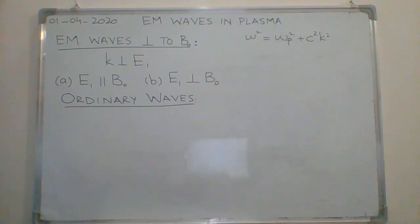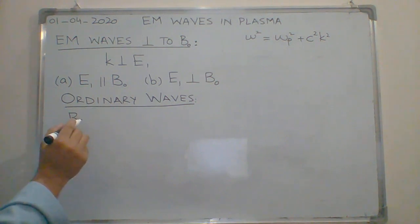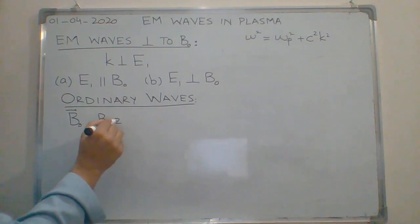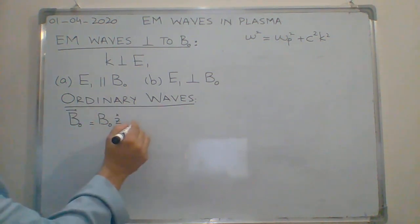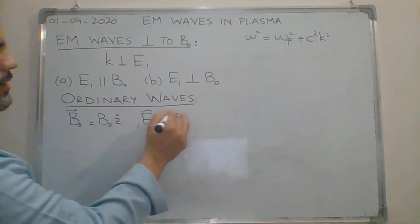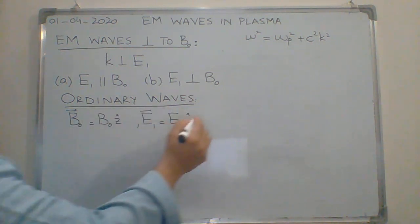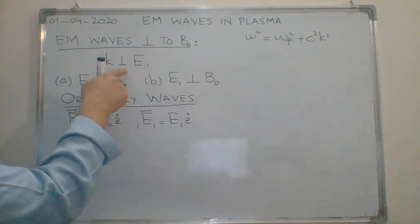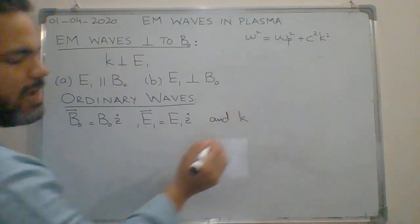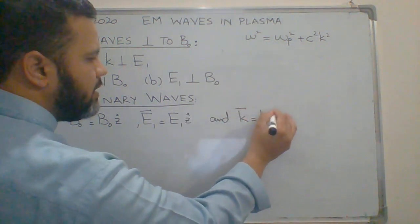Here, B0 is in the z-direction. As I am considering the case where E1 is parallel to B0, my E1 will also be in the z-direction. Since we are talking about electromagnetic waves, I take K in the x-direction.